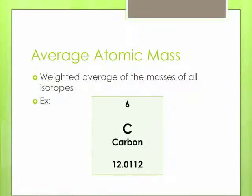This weight is so close to 12 because 98.9% of carbon atoms have a mass of 12. But 1.1% of atoms have a mass of 13, where they have one extra neutron. So we don't just average the two numbers together — 12 and 13 would give you an average of 12.5. We weight them based on how much of the isotope in a sample would be that mass. So because 98.9% would be 12, the average atomic mass on the periodic table would be much closer to 12.